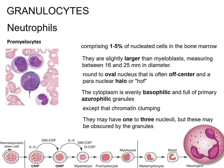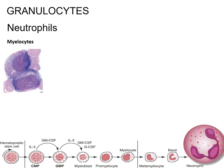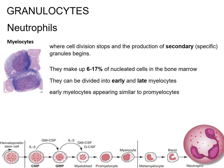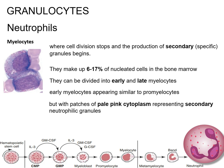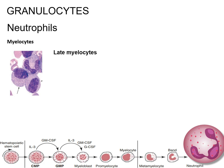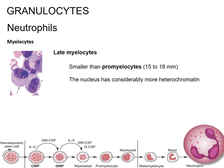Myelocytes are a stage of development in the formation of neutrophils where cell division stops and the production of secondary specific granules begins. They make up 6–17% of nucleated cells in the bone marrow and can be divided into early and late myelocytes. Early myelocytes appear similar to promyelocytes in size and nuclear characteristics but with patches of pale pink cytoplasm representing secondary neutrophilic granules, which slowly spread through the cell. As the cell divides, the number of primary granules per cell decreases. Late myelocytes are somewhat smaller, 15–18 mm, with considerably more heterochromatin, and nucleoli are difficult to see by light microscopy.